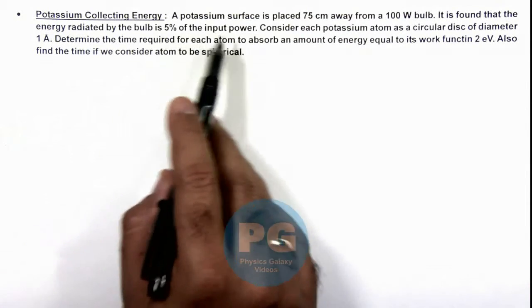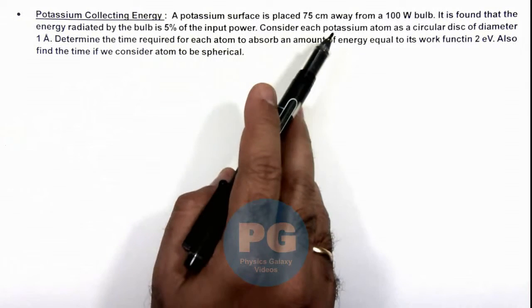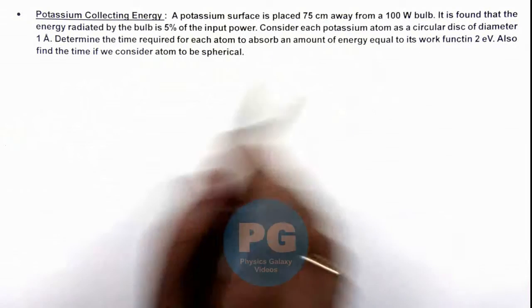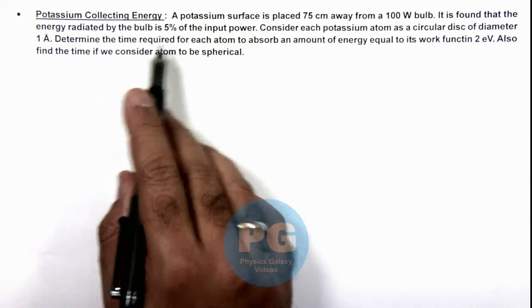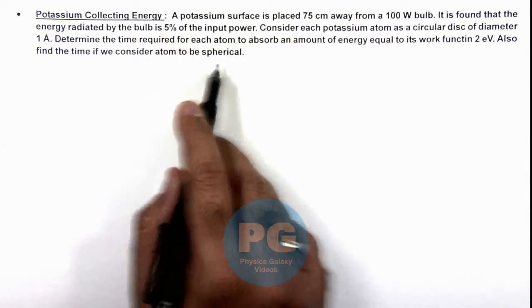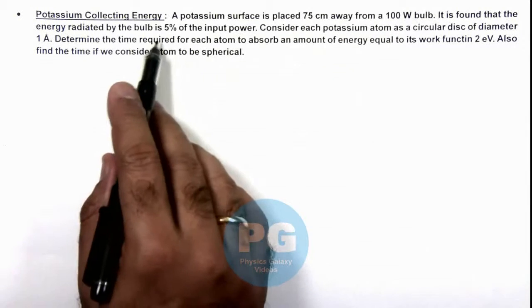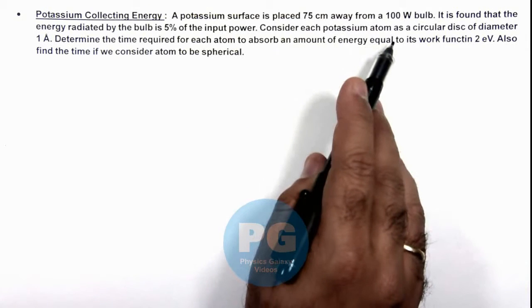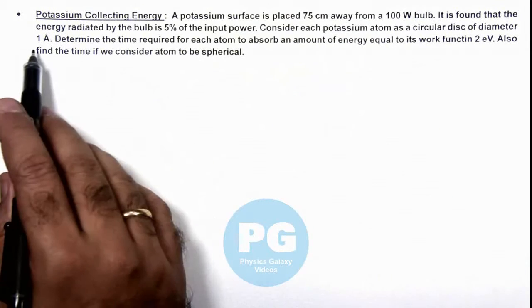A potassium surface is placed 75 centimeters away from a 100-watt bulb. The energy radiated by the bulb is 5% of the input power, meaning it radiates only 5 watts. We consider each potassium atom as a circular disc of diameter 1 Angstrom.